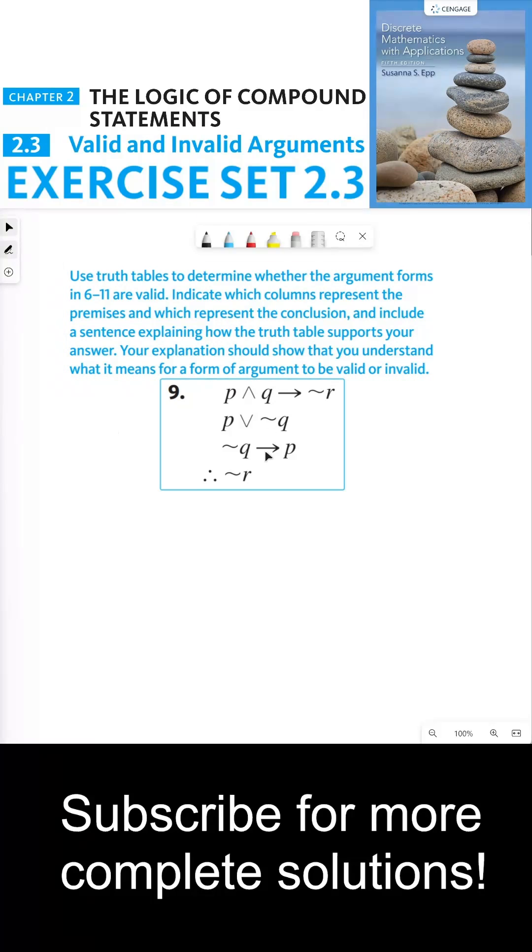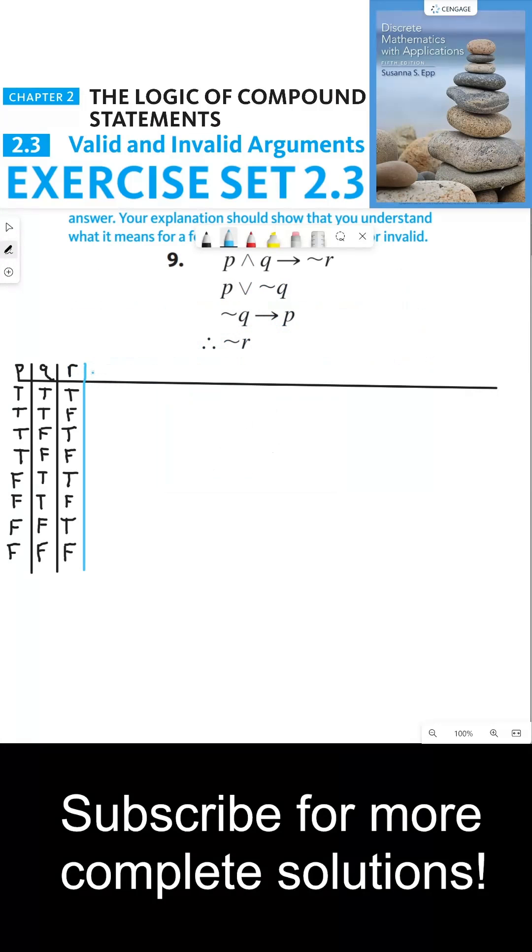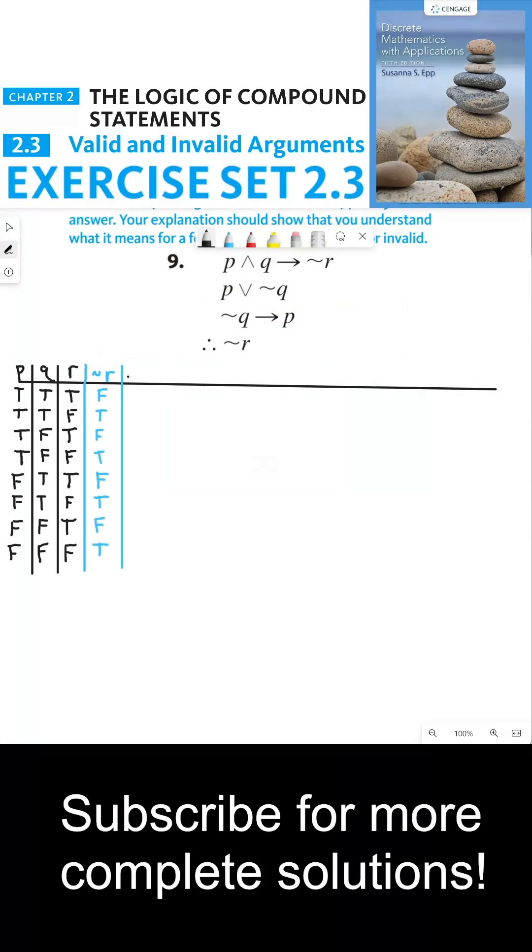So here we have a series of three statements, and we have not R as the conclusion. So if we're going to build a truth table, let's first build all four of these statements. So let's start with building not R, and then we'll need P and Q, and then we can do the first statement, which is P and Q implies not R.